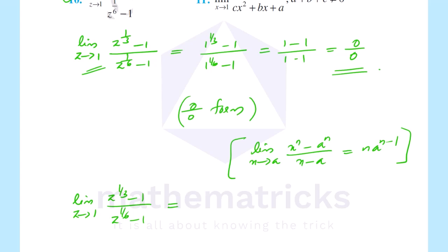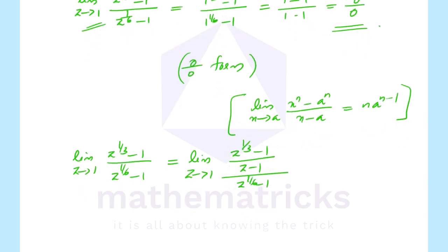The numerator and denominator are each divided by z minus 1. So the limit z tends to 1 becomes: z raise to 1 by 3 minus 1 divided by z minus 1, all divided by z raise to 1 by 6 minus 1 divided by z minus 1.